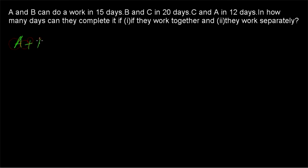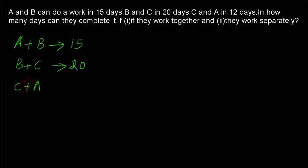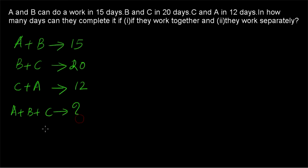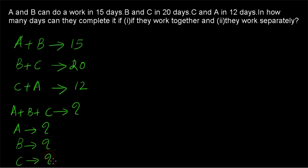A and B working together can complete a work in 15 days. B and C working together can complete the same work in 20 days, and C and A working together can complete the same work in 12 days. We need to find how many days A, B and C take working together, and how many days each takes working separately.